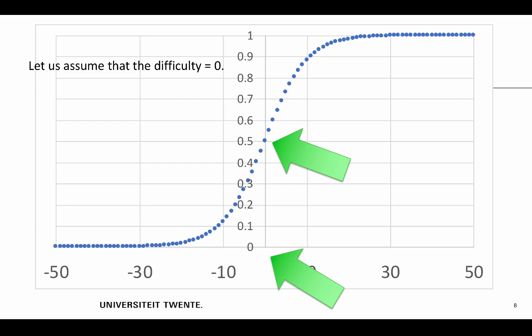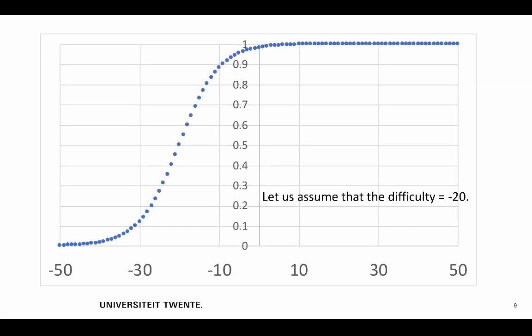Now let's take a simpler item. Okay, that will look like this. So let's assume a difficulty of minus 20. So we look at the latent trait. The latent trait says, okay, minus 20. Now the item positioned here is answered correctly by exactly 50 percent of the individuals. Okay, you can see that here.